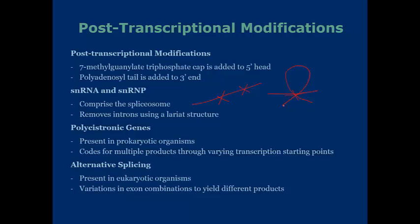Polycistronic genes are present in prokaryotic organisms, and they code for multiple products through varying transcription starting points. So if I've got a sequence, if I start here and go, it's going to create a different product than if I were to start here or even here. So depending on the starting point, you can create different expression patterns.